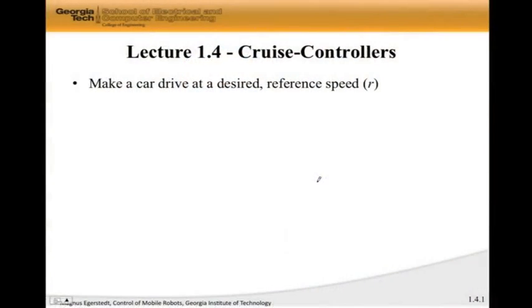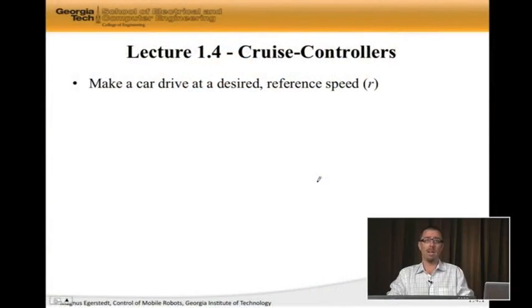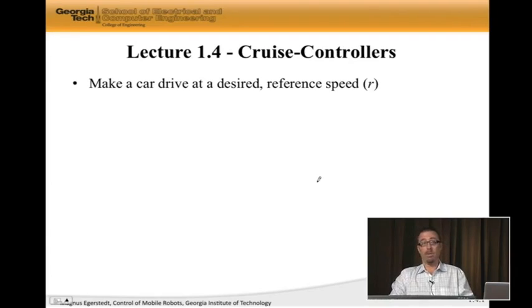Let's start with building a cruise controller for a car. The cruise controller's job is to make the car drive at the desired reference speed. If you recall, we're going to use r to describe the reference. So someone, you in the car, have set the reference speed to 65 miles per hour or whatever you desire. Now we want to understand how we should model the car so that we can make it go the reference speed.